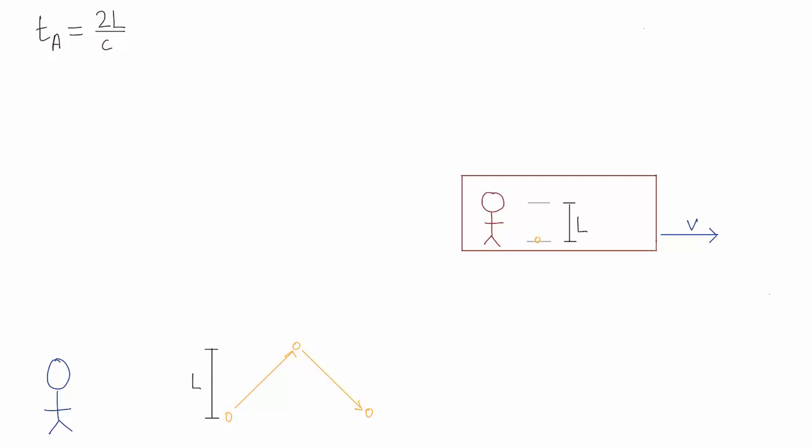So here we think about the second postulate of relativity. The speed of light is the same in all reference frames. So even though the light is moving diagonally, Bob should measure it to have the same value, C, that Alice measures.